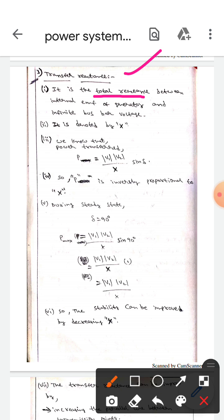It is the total reactance between the internal EMF of a generator and internal bus bar voltage. The EMF between these two, the total reactance between these two is known as transfer reactance. The transfer reactance is denoted by X.